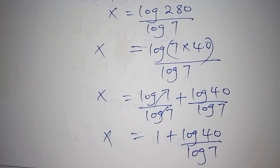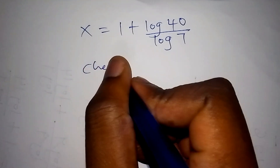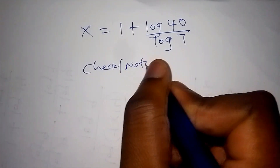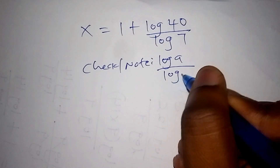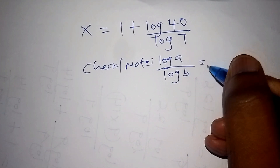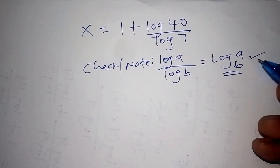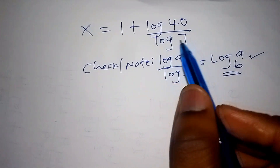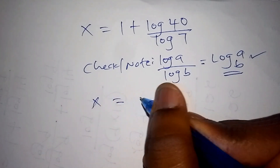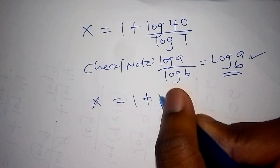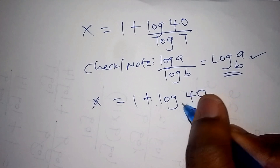Our next step: let us note that log A all over log B can also be written as the log of A to the base of B. Using this, log 40 all over the log of 7 becomes the log of 40 to base 7. So x is equals to 1 plus the log of 40 to base 7.